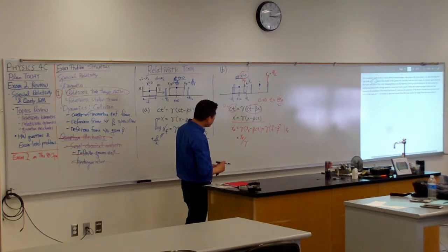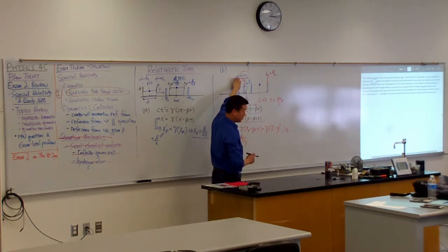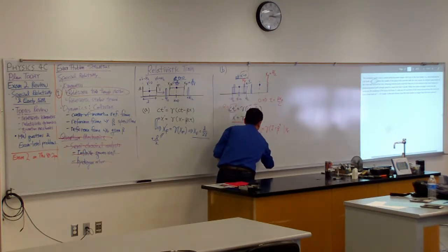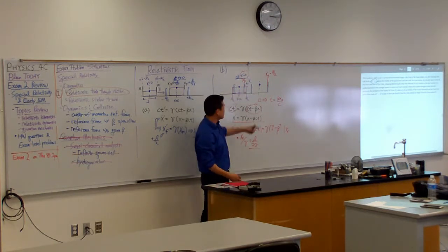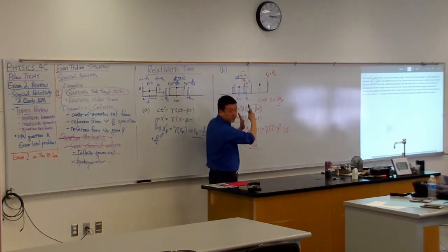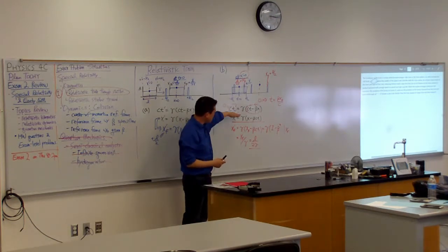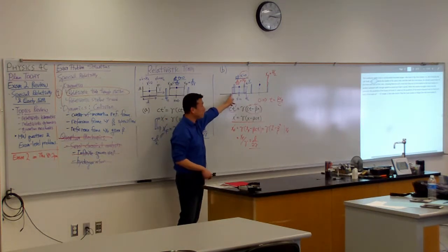Now we know xf equals L over 2, and x prime f equals L over 2γ. So you get the answer that you intuitively expect if you said the moving train station is shorter. The answer does say it is shorter — x prime f equals L over 2γ. But when you use the Lorentz transformation, what I'm hoping you see is exactly how these two pictures are consistent with each other, because these two pictures are both describing the exact same physical situation.